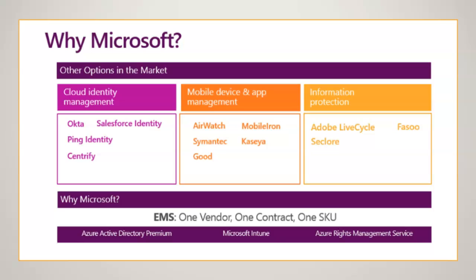If you look at other products, for example, some products just give identity management over the cloud — for example, Okta, Salesforce Identity, Ping Identity, or Centrify. These are competitors that can address cloud identity management, but they don't have other products which can address mobile device management, app protection, application management, or application delivery.